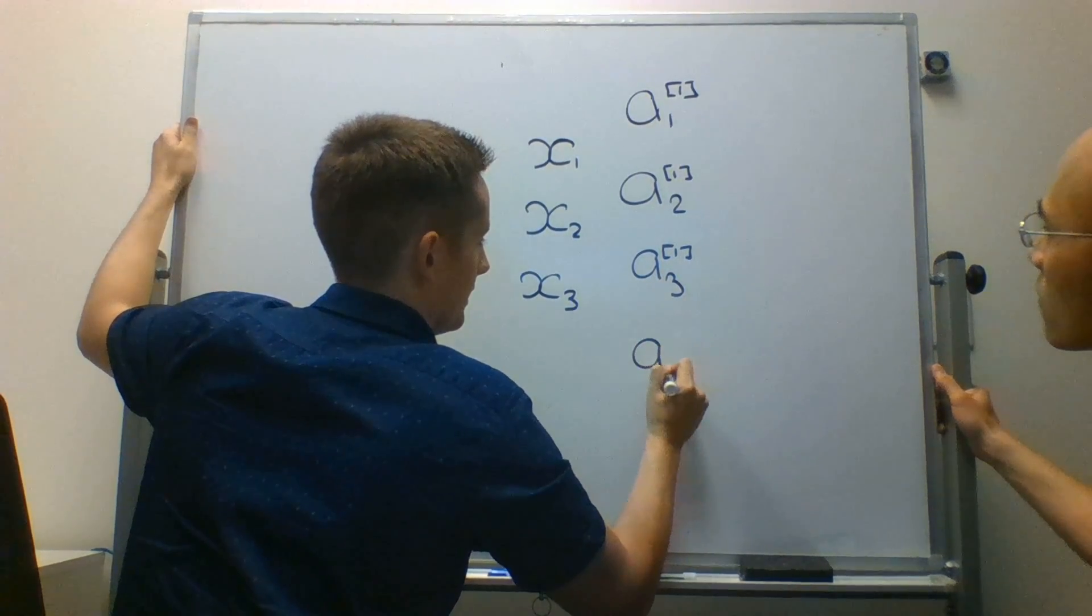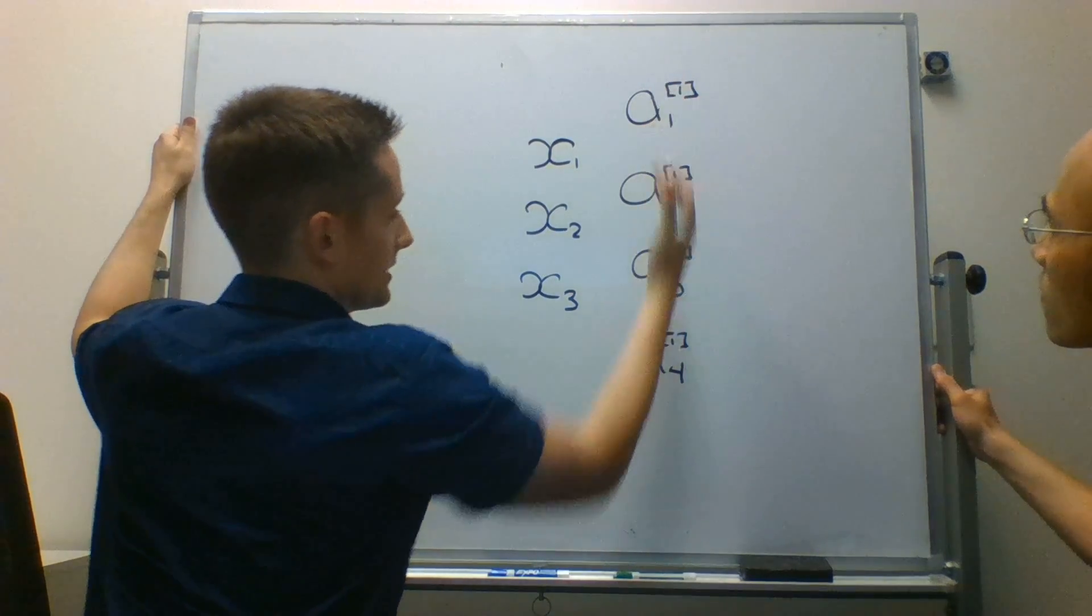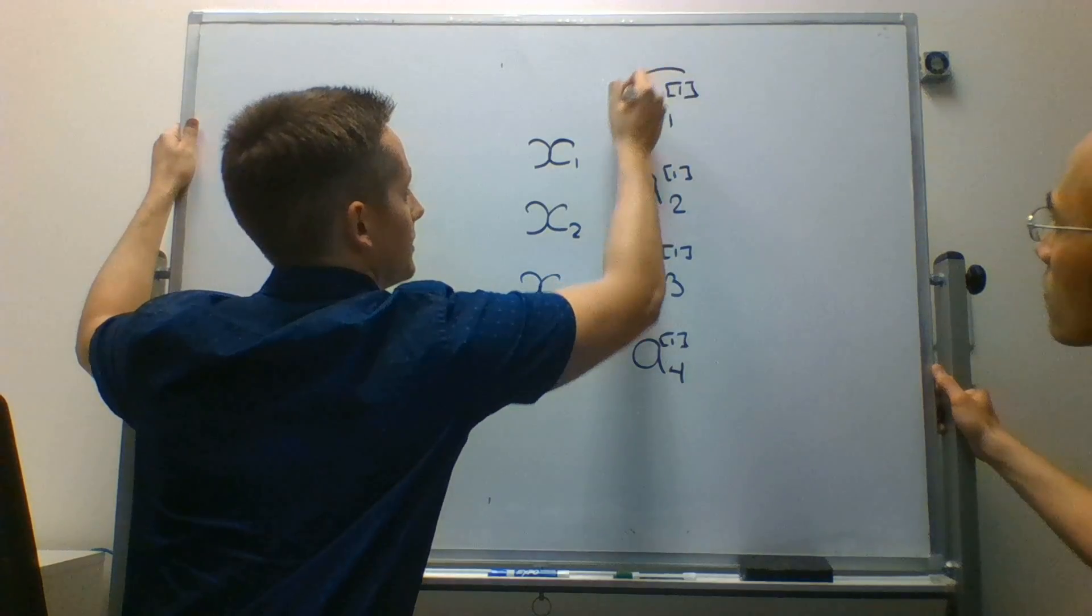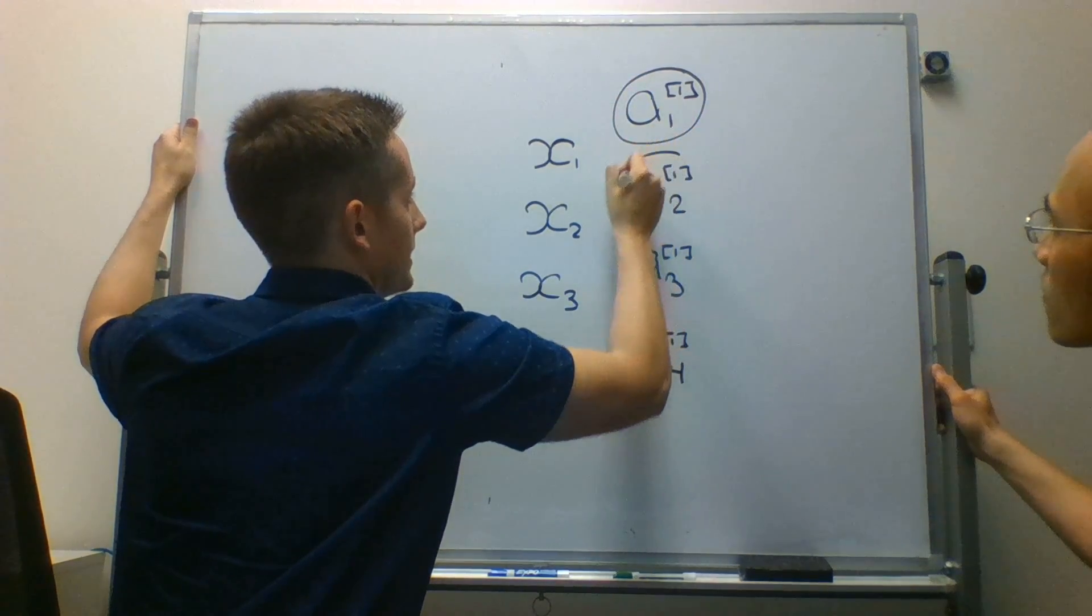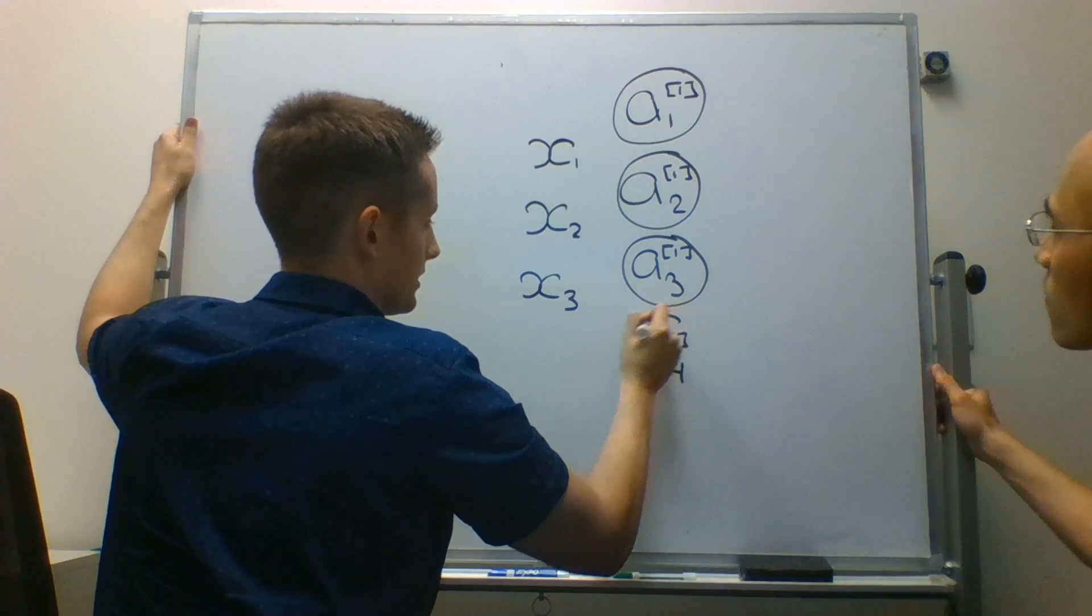I say layer 1 because it's in this vertical line, and I'll put circles around them because they represent the neurons or nodes. Those are analogous terms.